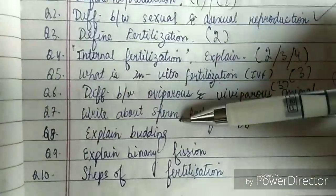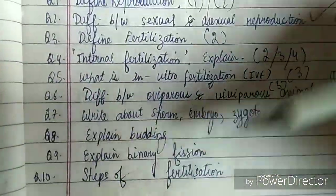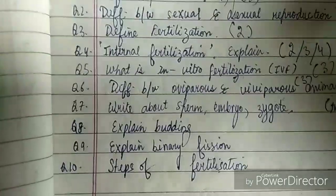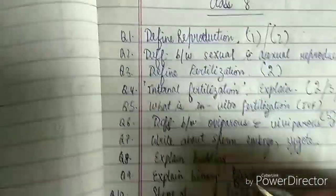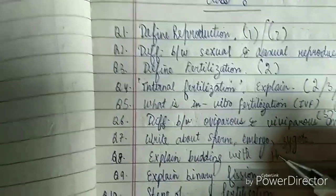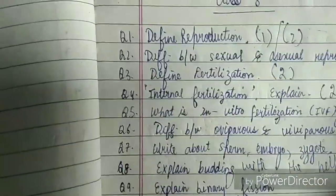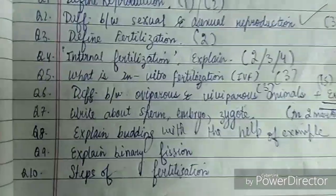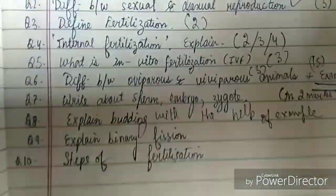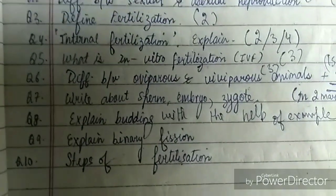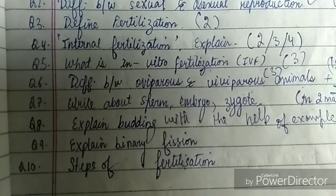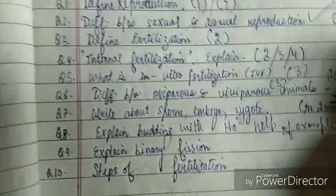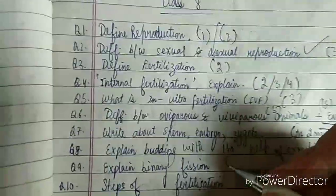Three very important questions: question eight — explain budding; question nine — explain binary fission; question ten — steps of fertilization. For budding and binary fission, the question will say 'explain with the help of an example,' so you have to take up an example and then explain what it is. These two can each be asked for three marks.